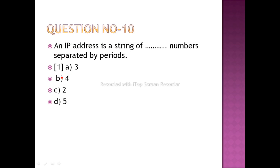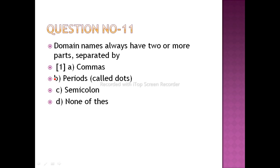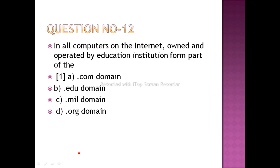An IP address is a string of four numbers separated by periods. When you see an IP address, it is a combination of four numbers separated by dots. Domain names always have two or more parts separated by periods — that is, dots — not commas.